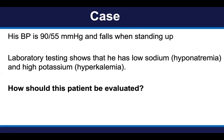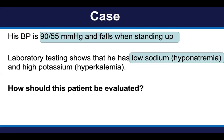On exam, his blood pressure was low — 90 over 55 mmHg — and when he stood up, it dropped even lower, something we call orthostasis. His laboratory tests showed his sodium was very low, something we call hyponatremia, and his serum potassium was high — hyperkalemia. This is a very prototypical, almost classical presentation of primary adrenal insufficiency. Not all cases present this classically, but many do.